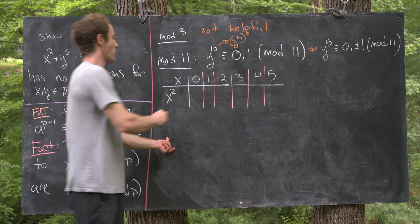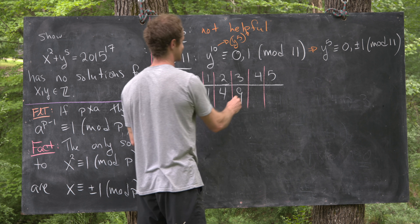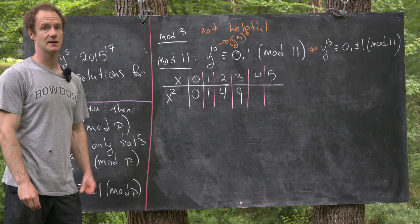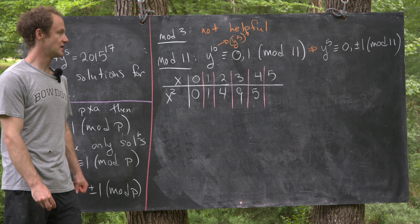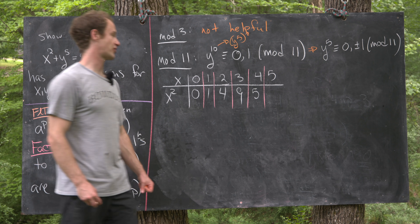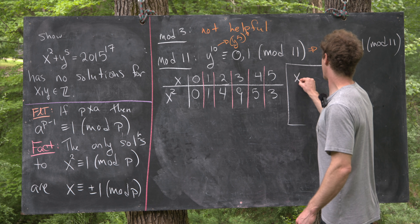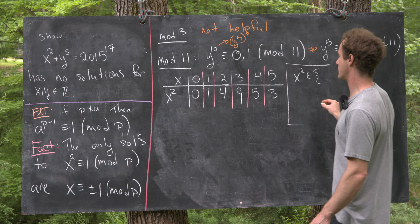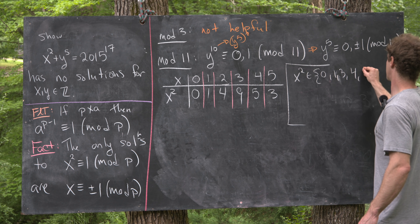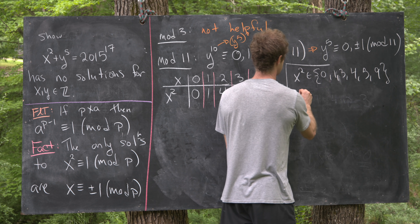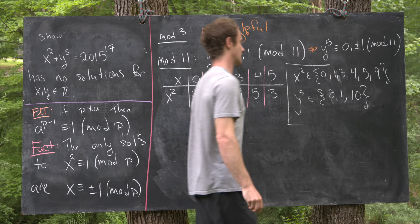Let's fill this table in: 0 squared is 0, 1 squared is 1, 2 squared is 4, 3 squared is 9, 4 squared is 16 which is 5 mod 11, and 5 squared is 25 which is 3 mod 11. So x squared working mod 11 will be from the set {0, 1, 3, 4, 5, 9}. And y to the 5th comes from the set {0, 1, −1}, where −1 is the same as 10 mod 11.